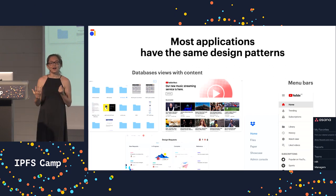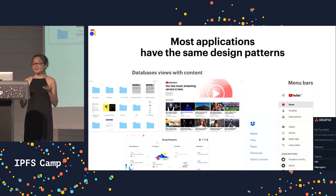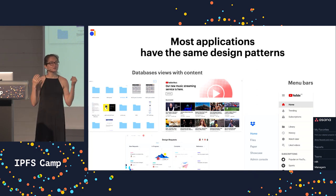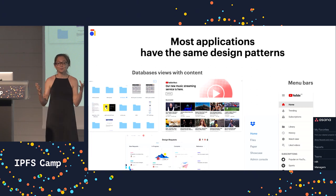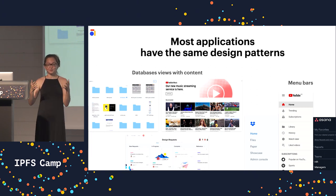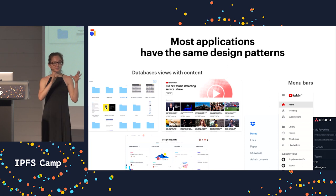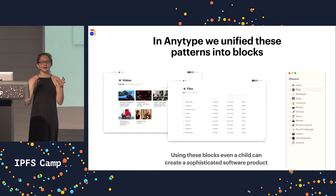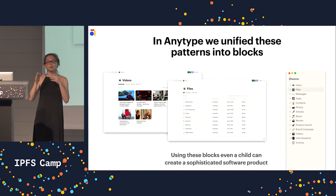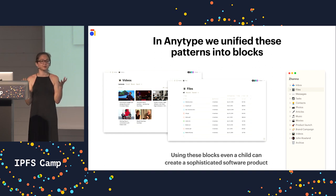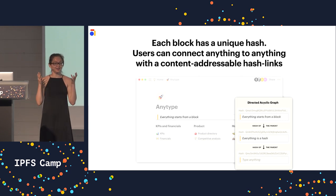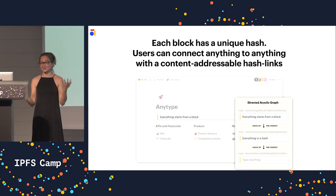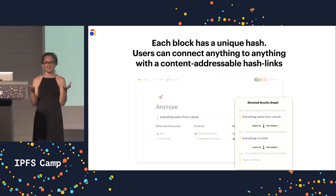How is a unified UI even possible? Actually, most applications like Dropbox, Asana, YouTube, Medium, and Spotify are just databases with content, so they share design principles. We unified these design principles into blocks. Using these blocks, even a child can create a sophisticated software product. Each block in AnyType has a unique hash, so users can connect anything to anything with content addressable hash links.